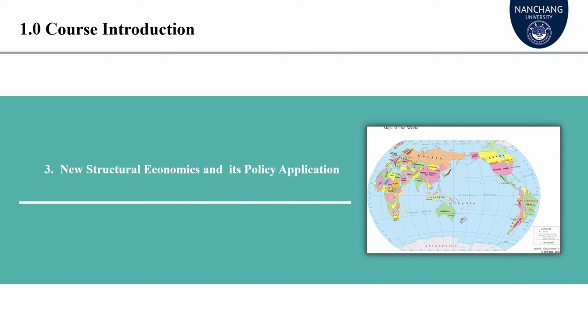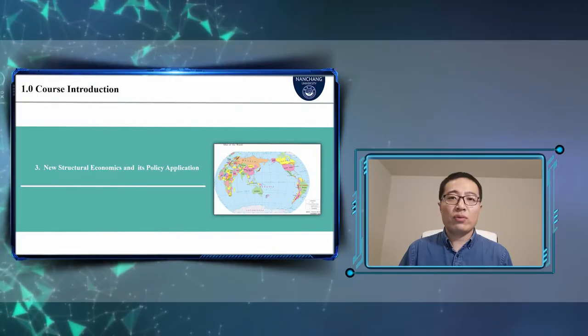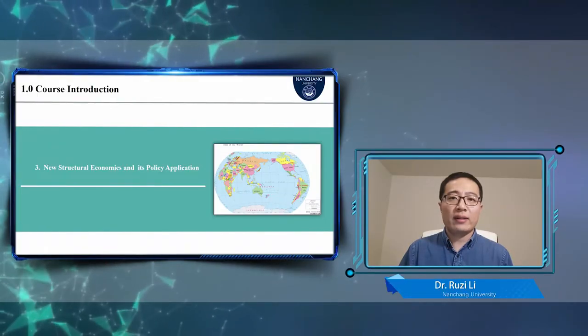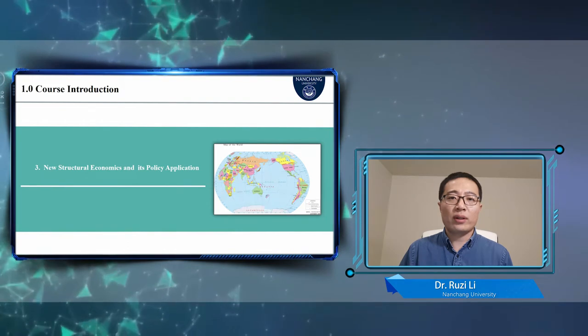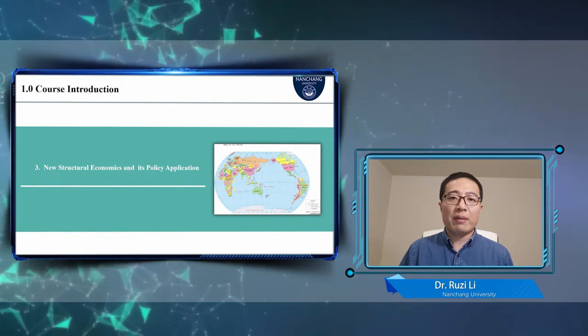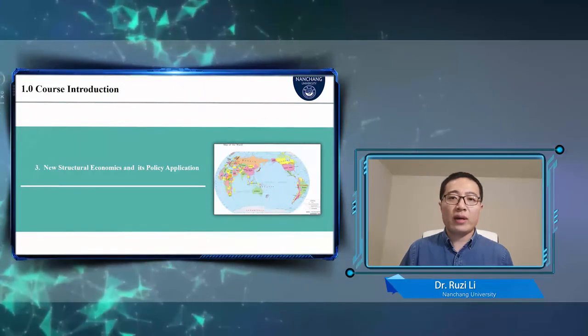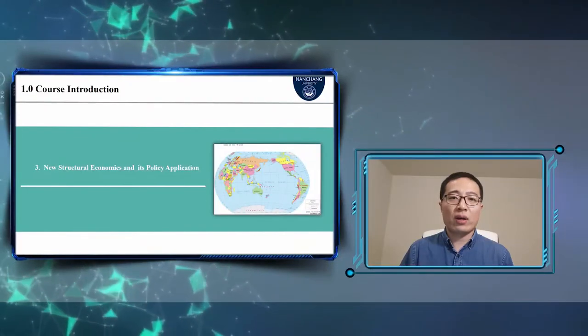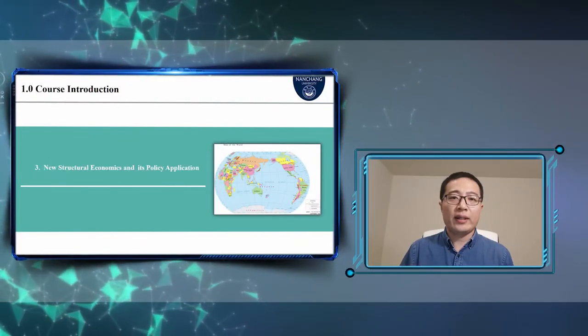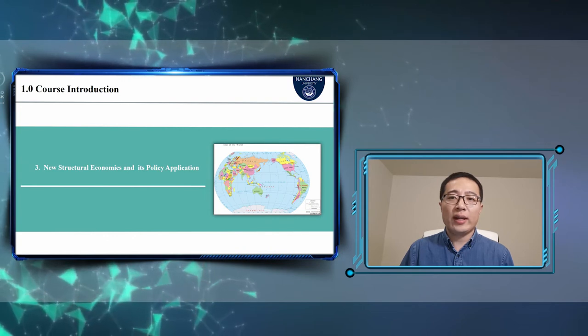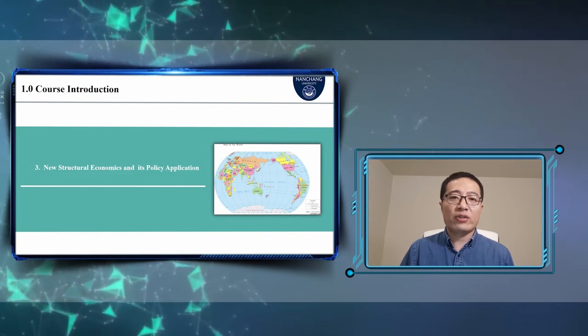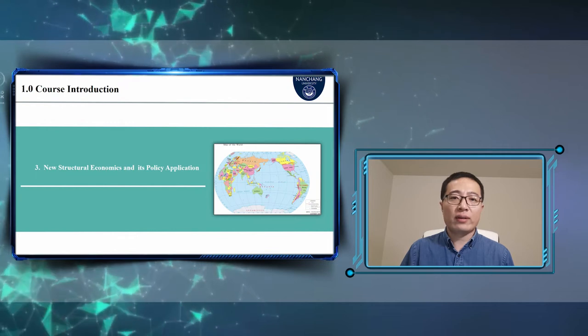Chapter 3 is New Structural Economics and its Policy Application. New Structural Regional Economics is developed on the basis of New Structural Economics. This chapter will focus on the theory and assumptions of New Structural Economics, which is helpful for our theoretical understanding of the endowment structure and changes in industrial structure.